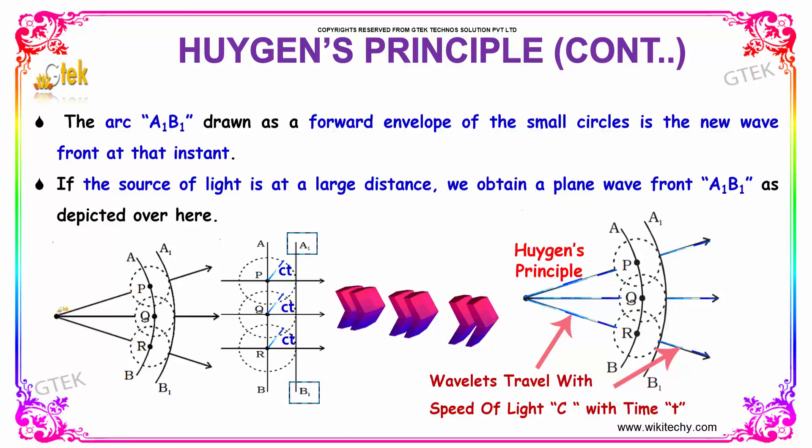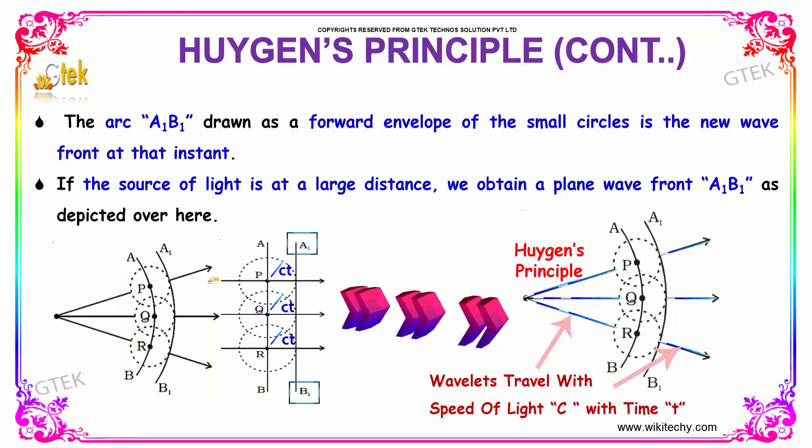If the light source is near, you will get this kind of shape, and if it is far, you will get this kind of shape.